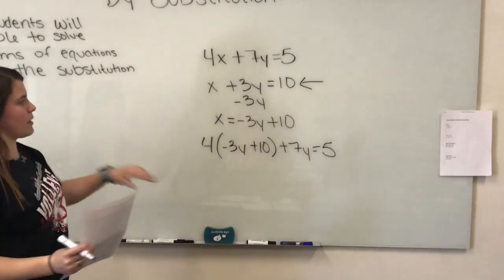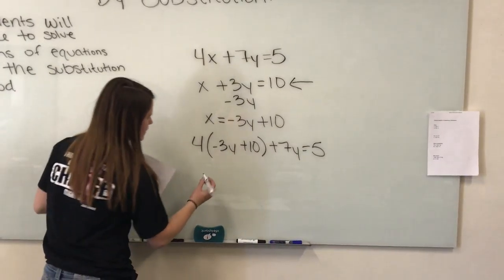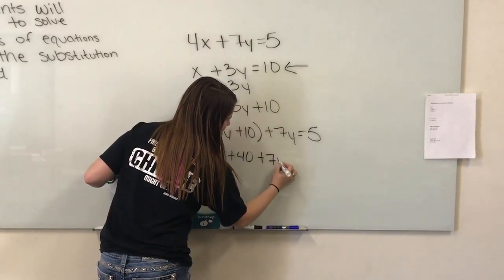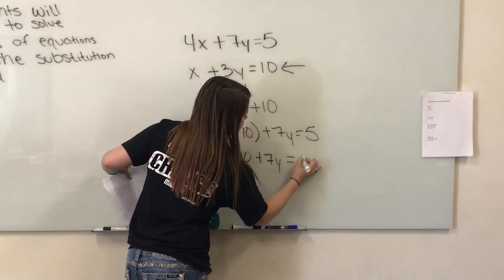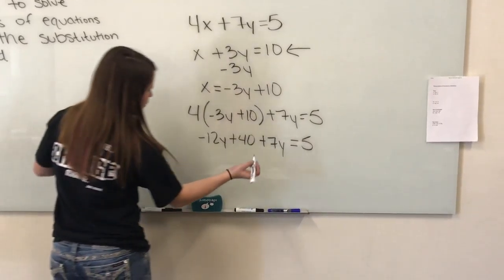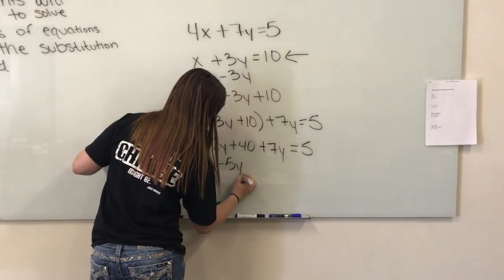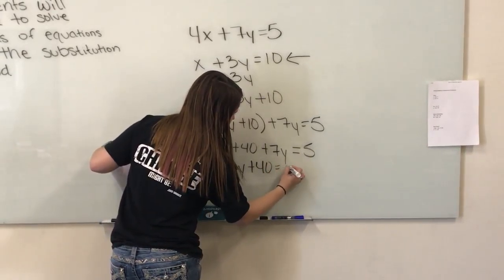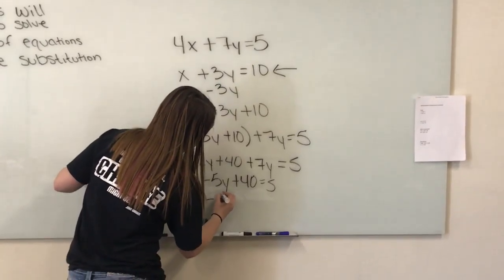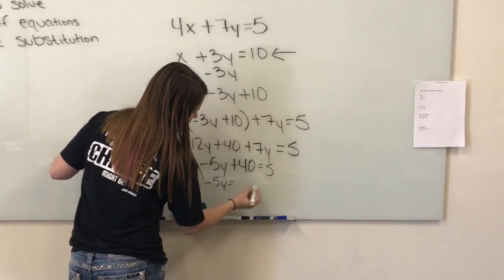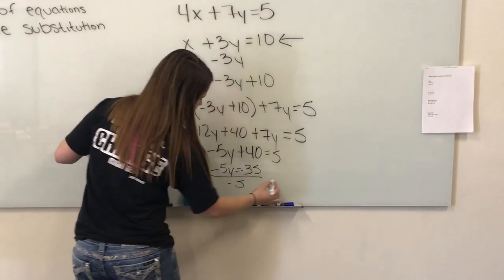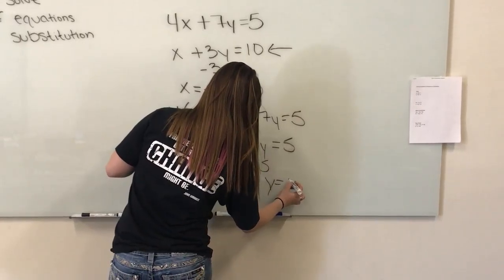Now you can solve for y. Distribute the 4 to get negative 12y plus 40 plus 7y equals 5. Combine like terms to get negative 5y plus 40 equals 5. Using algebra to isolate the variable, you get negative 5y equals negative 35, and dividing by negative 5 gives y equals 7.